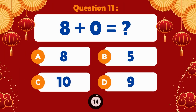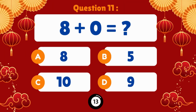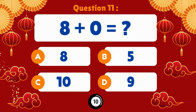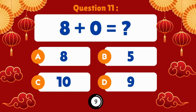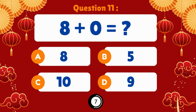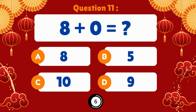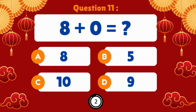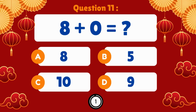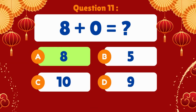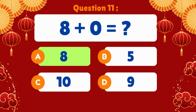Eight plus zero. Eight plus zero is equal to eight.